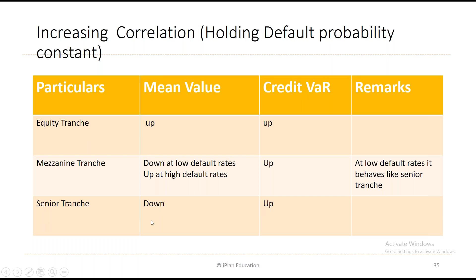The mezzanine tranche again is ambiguous — it has negative convexity for lower default rates but positive convexity for higher default rates. At high correlations, all tranches are less convex — they respond more linearly to changes in default rates. Convexity disappears when correlation increases and tranches respond more linearly to changes in default rates.